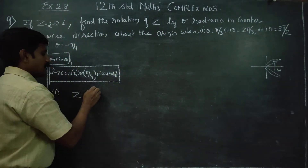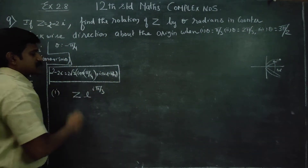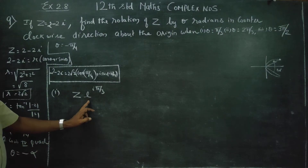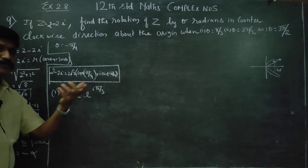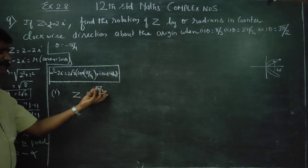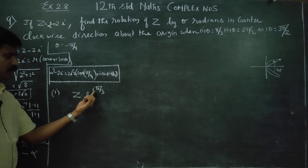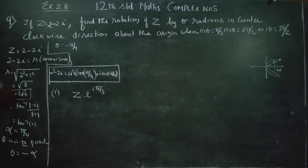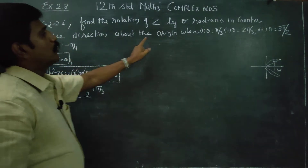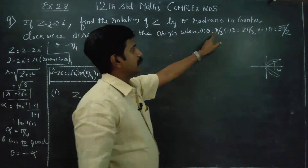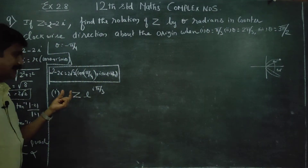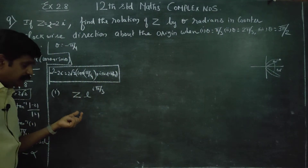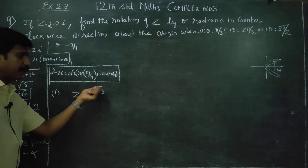Rotation about the origin through π/3 in the counterclockwise direction — just multiplication of the complex number by e^(iπ/3). Just add the arguments. This is the first sub-part: rotation about the origin through π/3 in counterclockwise direction implies you have to multiply z by e^(iπ/3).